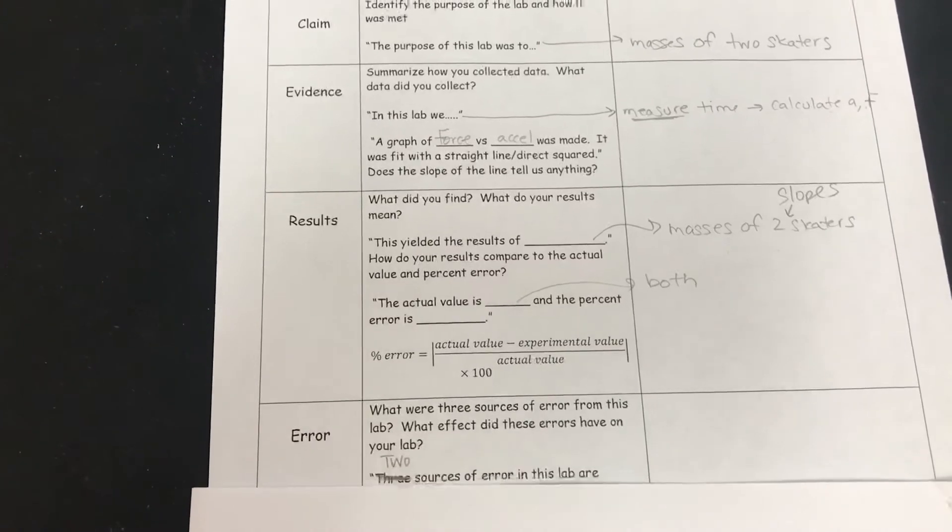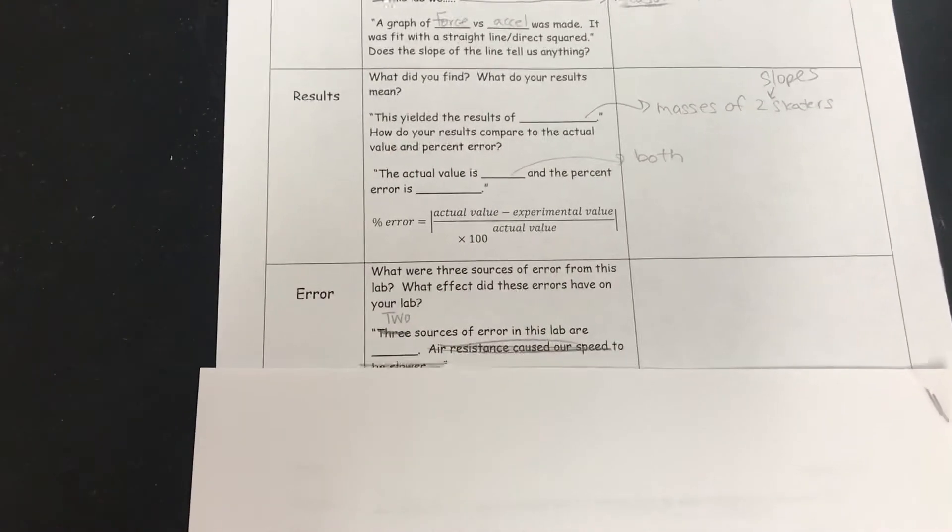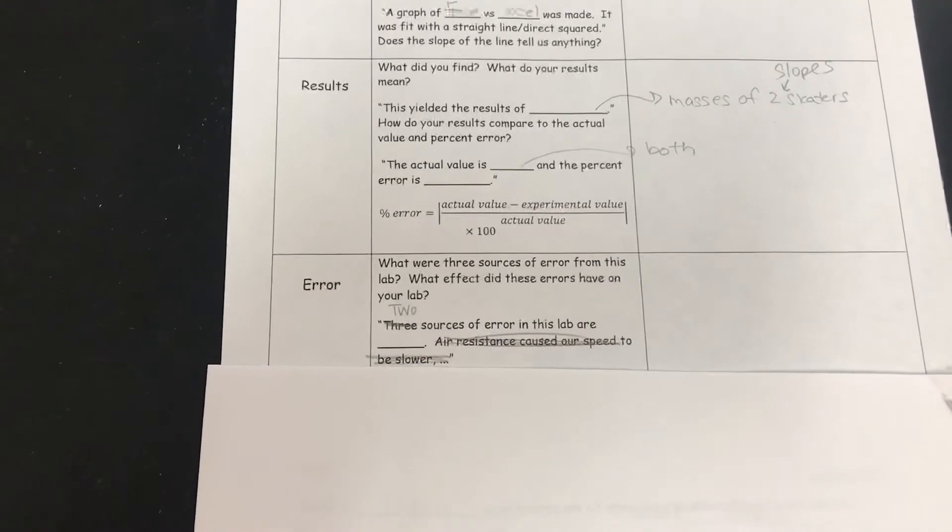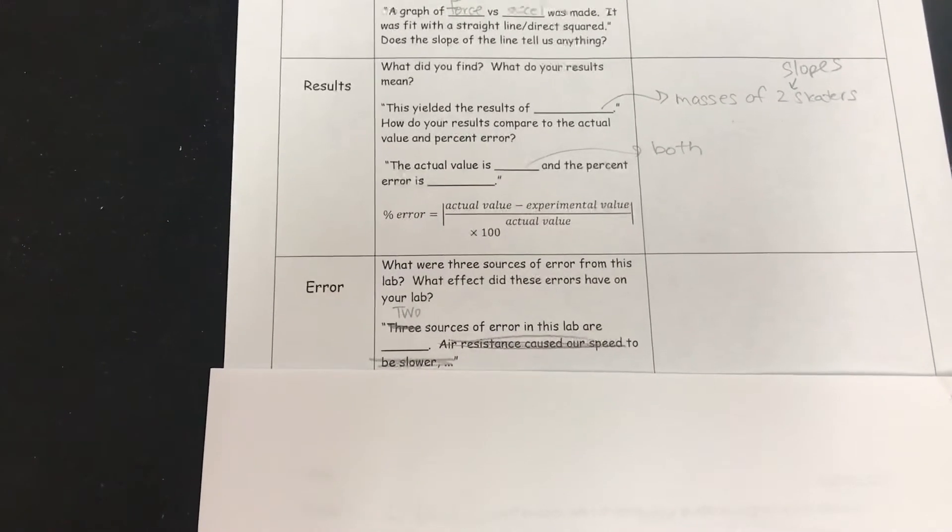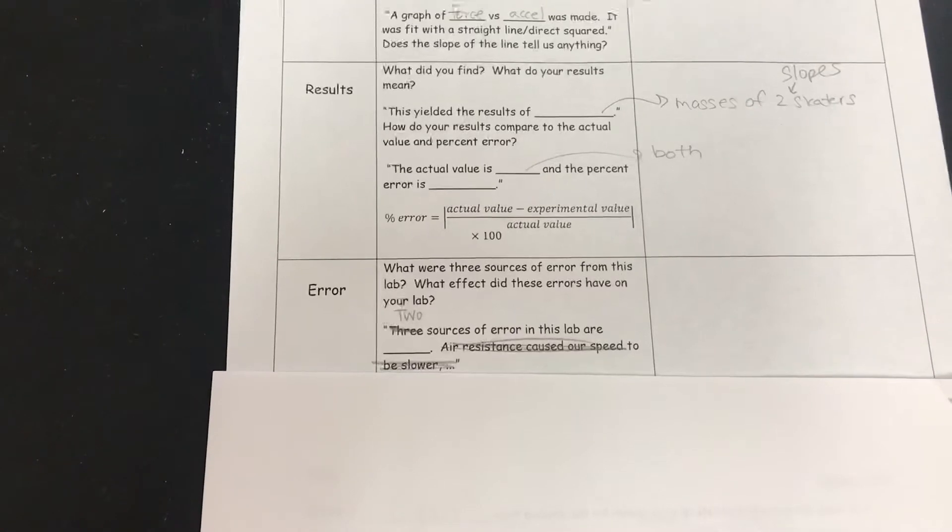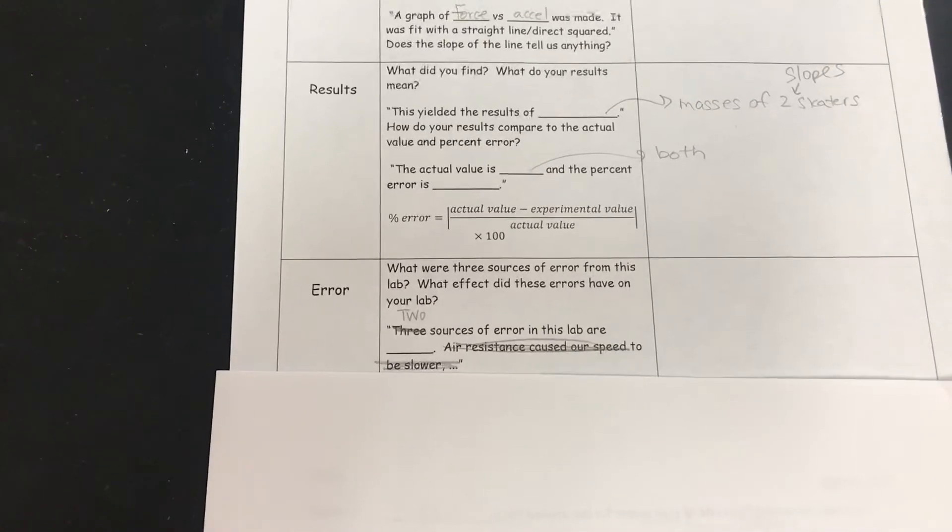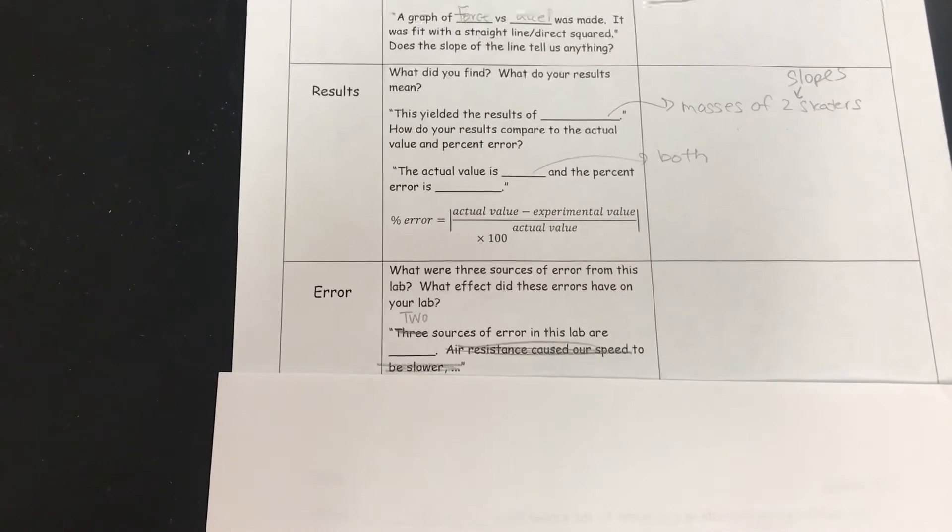And the last sentence that I want you to write is two sources of error in this lab are. You don't need to write anything else. I would say one main source of error is friction. But it's up to you in terms of what you write. Good luck with this conclusion.